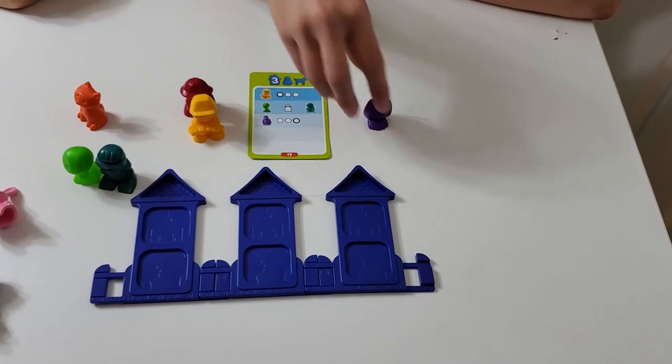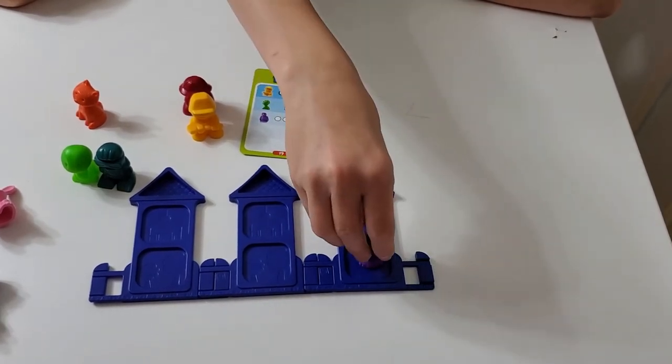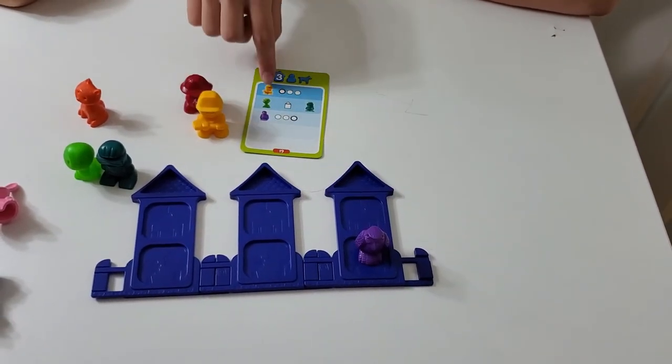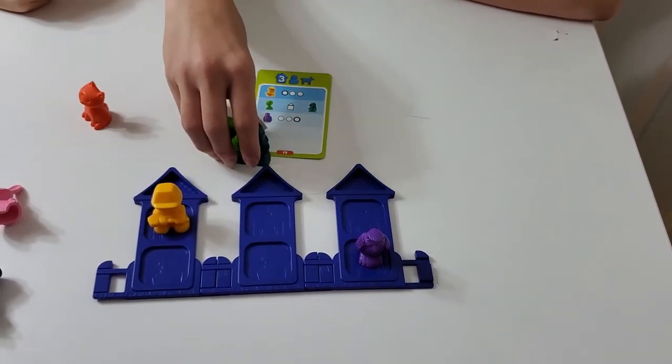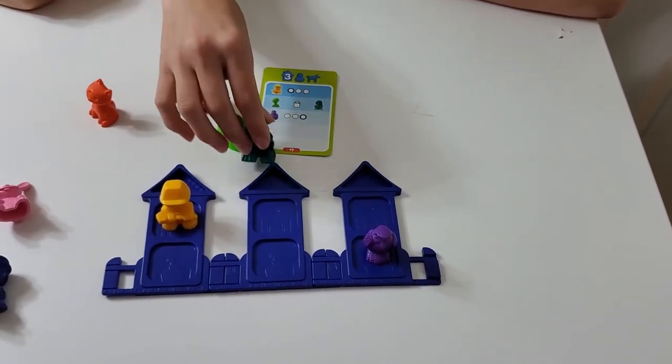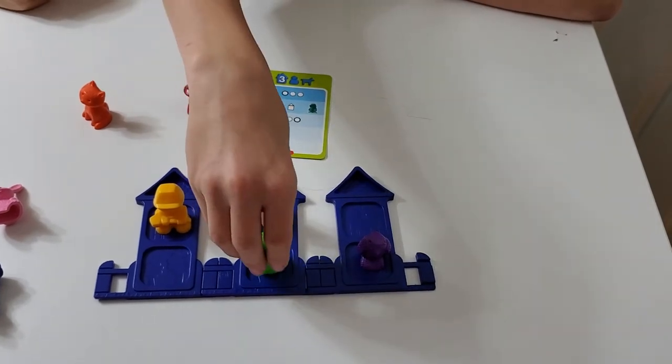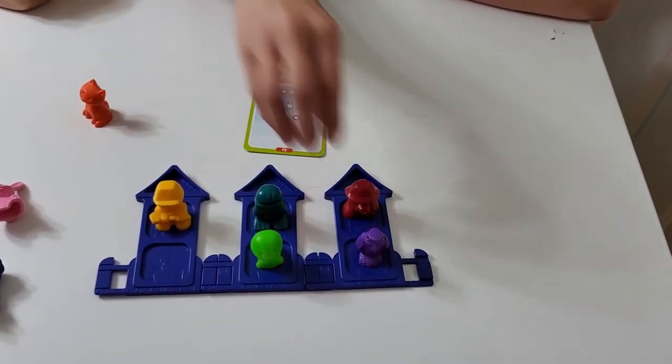On this card the bird goes here, yellow goes here. The only open house with two spaces is this one, so they have to go here and fill in the rest.